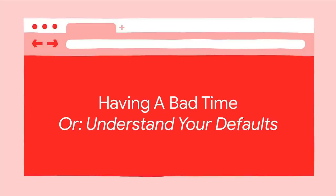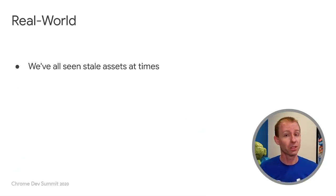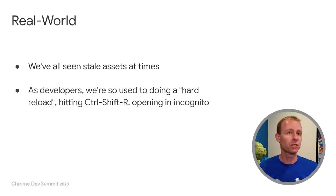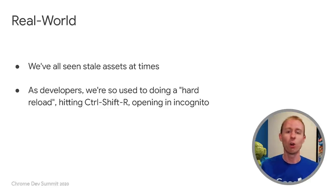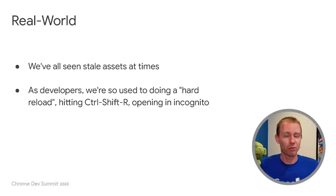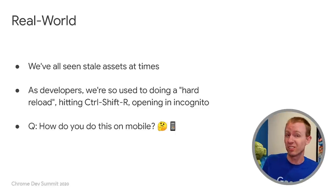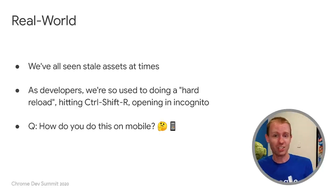So what does having a bad time actually mean? Bad caching rules tend to show up as something known as stale assets. As web developers, we're so used to doing a hard reload when our sites just don't look right — I hit Ctrl+Shift+R or open a tab in incognito habitually. But if you're testing a site on your phone, how do you do a hard reload on mobile? Turns out there's no button for that. I've got to manually clear the cache. There's no key code for that.